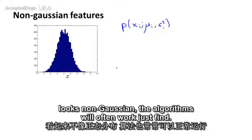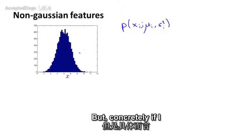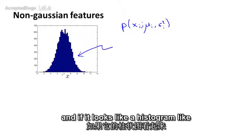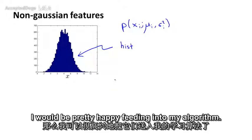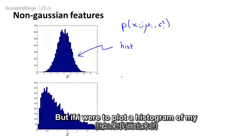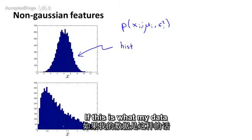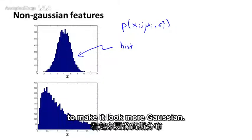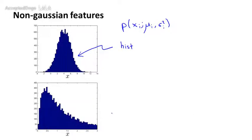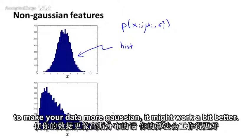In case the data looks non-Gaussian, the algorithm will often work just fine. But if I plot the data and it looks like a histogram that doesn't look at all like a bell-shaped curve — a very asymmetric distribution with a peak way off to one side — what I'll often do is play with different transformations of the data in order to make it look more Gaussian. The algorithm will usually work okay even if you don't, but if you use these transformations to make your data more Gaussian, it might work a bit better.